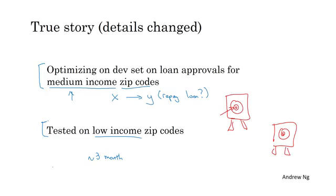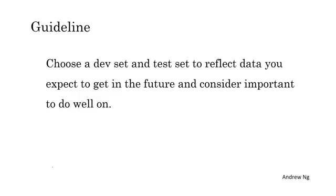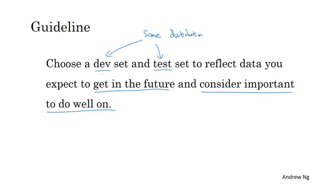What I recommend for setting up a dev set and test set is: choose a dev set and test set to reflect data you expect to get in the future and consider important to do well on. And in particular, the dev set and the test set here should come from the same distribution. Whatever type of data you expect to get in the future and want to do well on, try to get data that looks like that, and whatever that data is, put it into both your dev set and your test set. Because that way you're putting the target where you actually want to hit and having the team iterate very efficiently to hitting that same target, hopefully the same target as well.